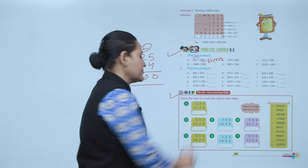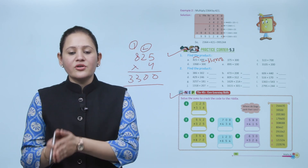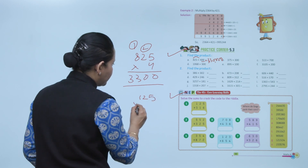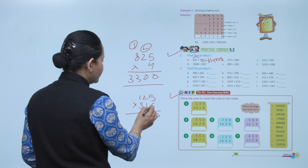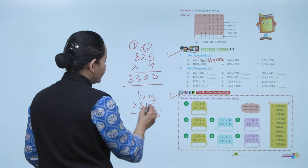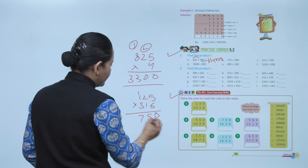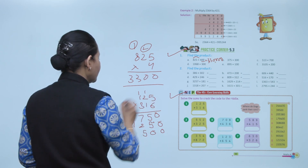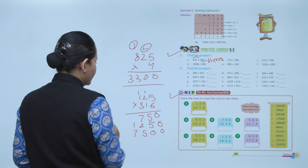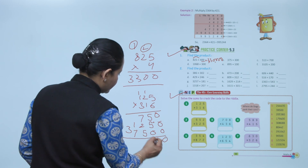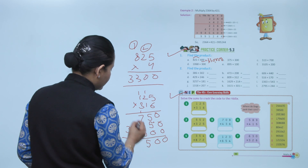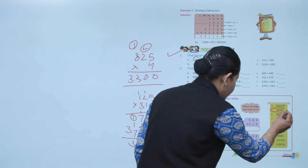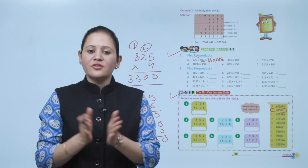Next is the 4 C's code learning skills: solve the sums to crack the code to the riddle. For example, multiply 125 by 316. Working through: 6 into 5 is 30, carry 3; 6 into 1 is 6 plus 1 is 7; then proceed with the tens and hundreds digits similarly. The answer is 39,500. Multiply the numbers in the same way to solve the riddle.